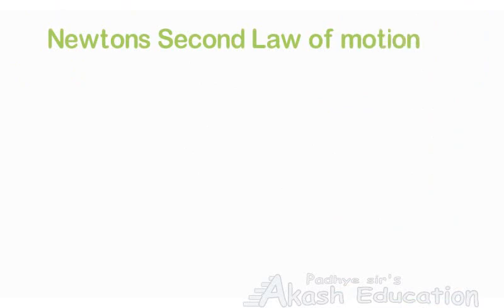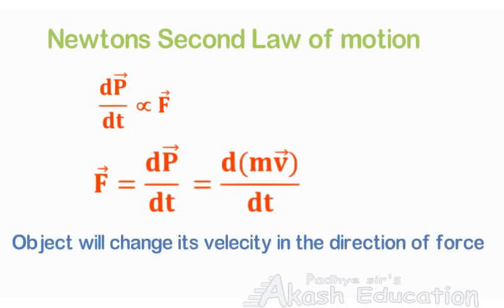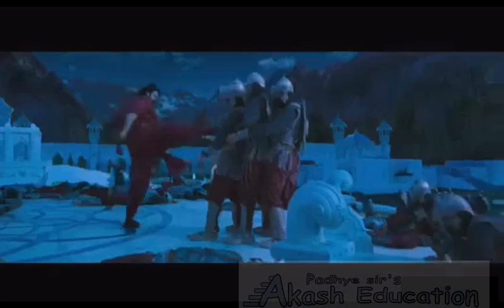To understand the mistake, I will consider Newton's second law. This states that change in momentum takes place in the direction in which the force is applied. That means the direction of change in velocity will also be in the same direction as that of force. Here we can see that force was applied in this direction, and according to the second law, we expect soldiers and sword to move in the forward direction. However, we see that the sword moves in the backward direction. This is a violation of Newton's second law.